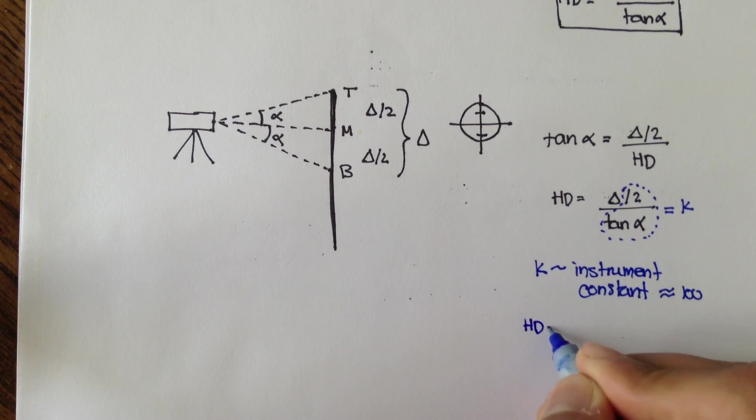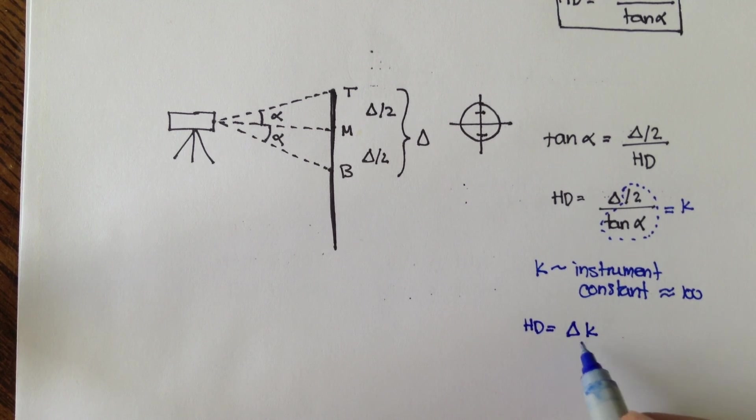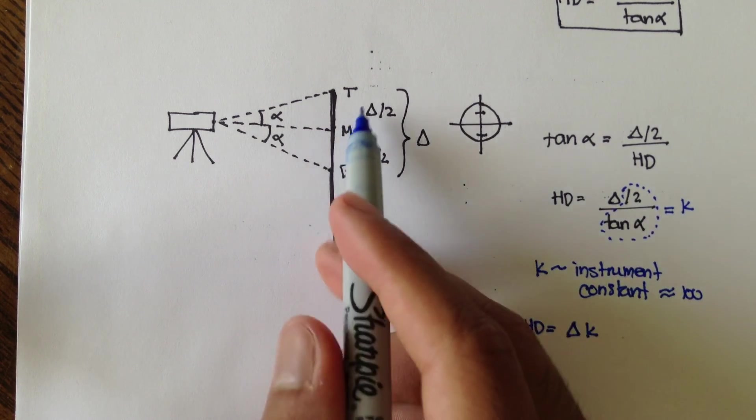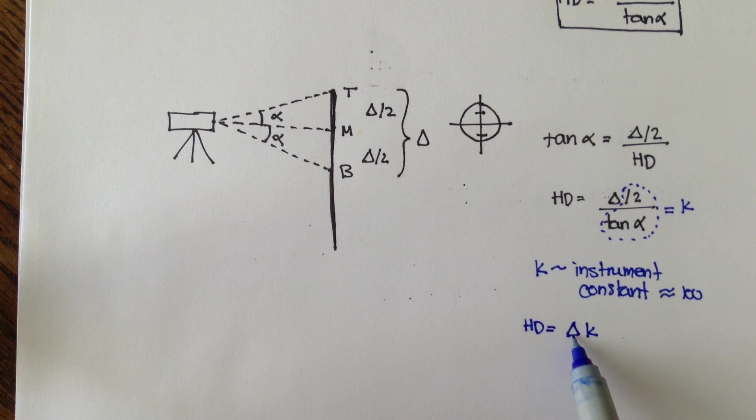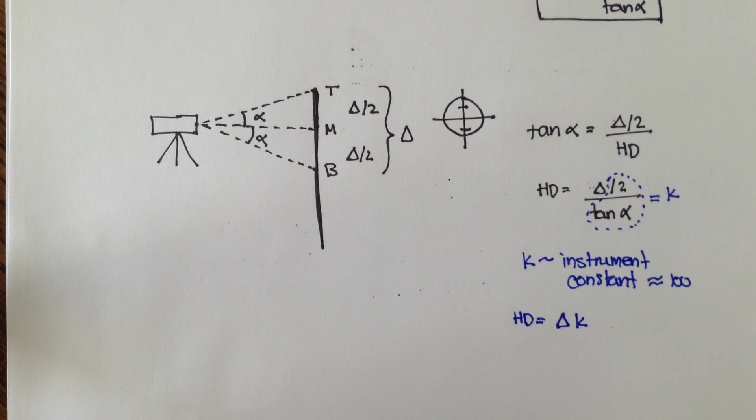We can say that the horizontal distance is simply delta times K, where K is usually 100. So, whatever difference you get from the top and bottom, that would be your delta. You multiply that by K, or in our case, 100, and you would get your approximate horizontal distance.